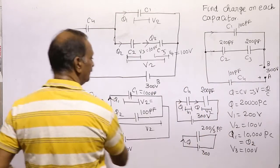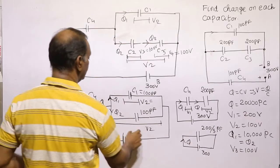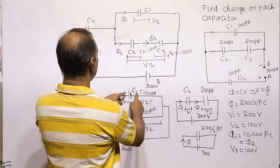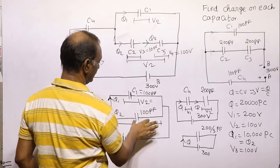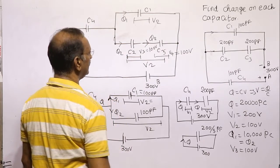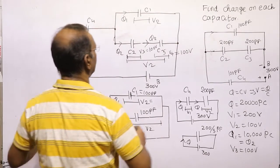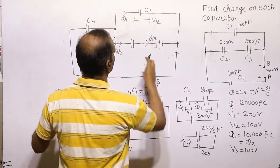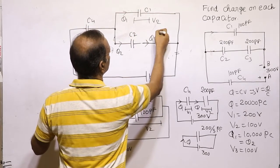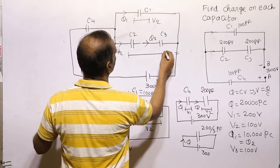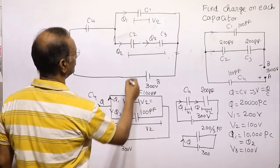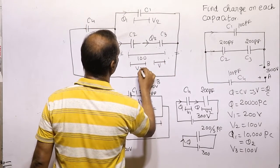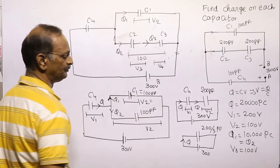V2 is the voltage applied across the C2-C3 series branch which is 100 volts. This 100 volts will be shared between C2 and C3. We call the voltage across C2 as V3 and across C3 as V4.